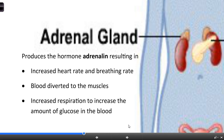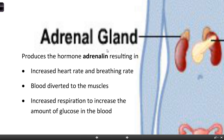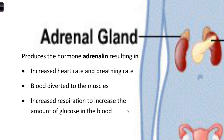The adrenal gland produces adrenaline - this is a big focus and one where you definitely need to know the effects of adrenaline. The name tells us where it is: 'renal' basically means our kidneys, so 'adrenal' means on the kidneys. That's exactly where we find the adrenal gland, just sitting on top of the kidneys. So the adrenal gland produces the hormone adrenaline, and you need to know the three effects that adrenaline has.